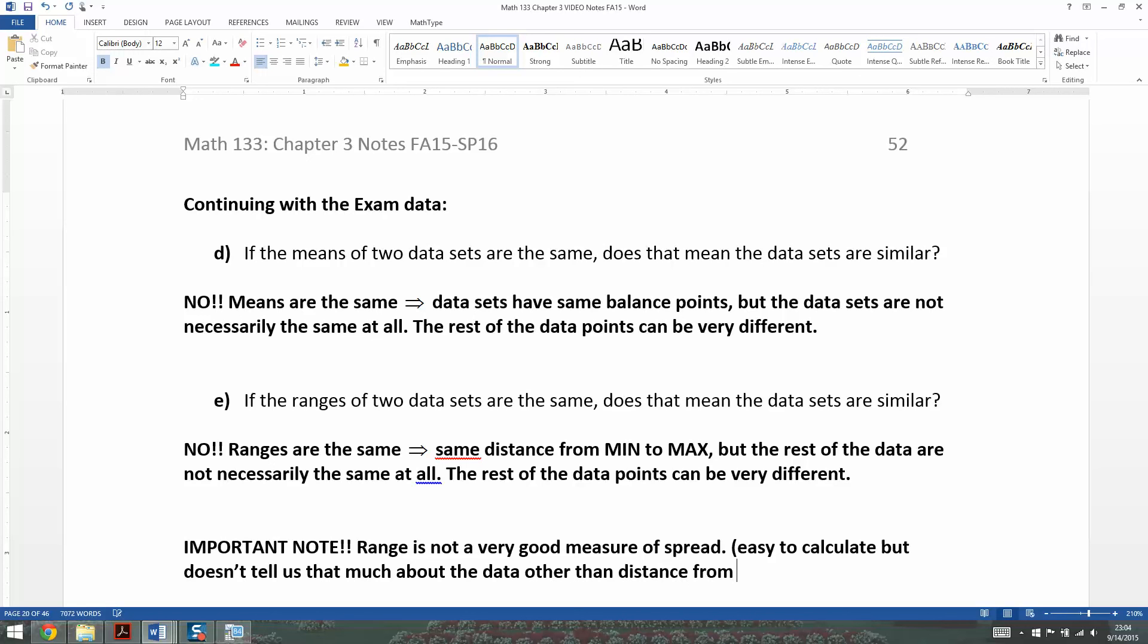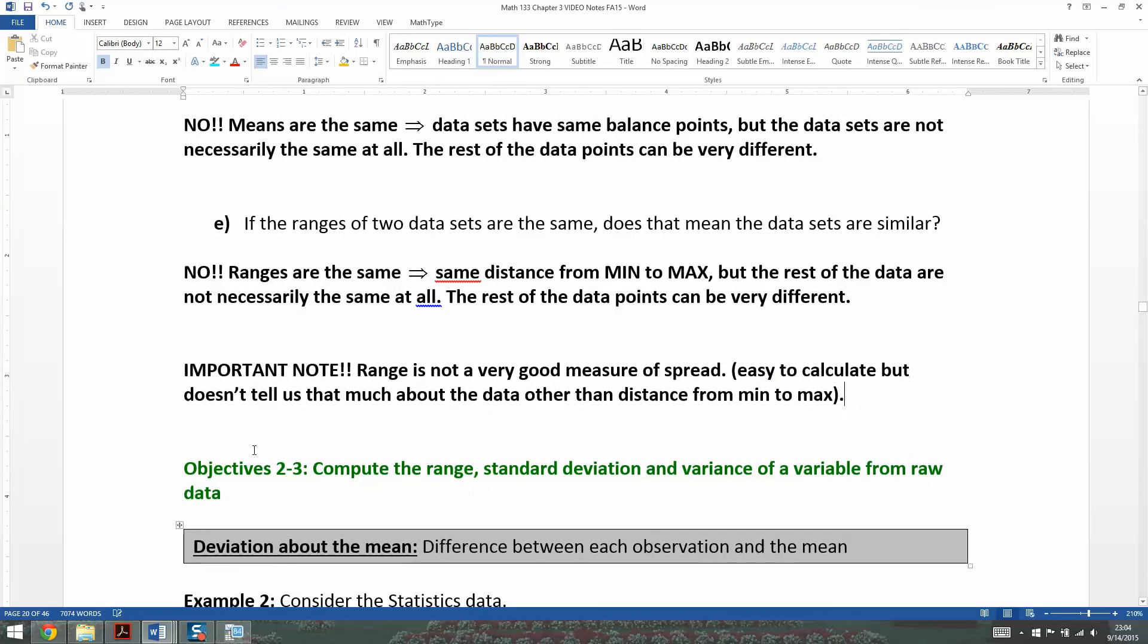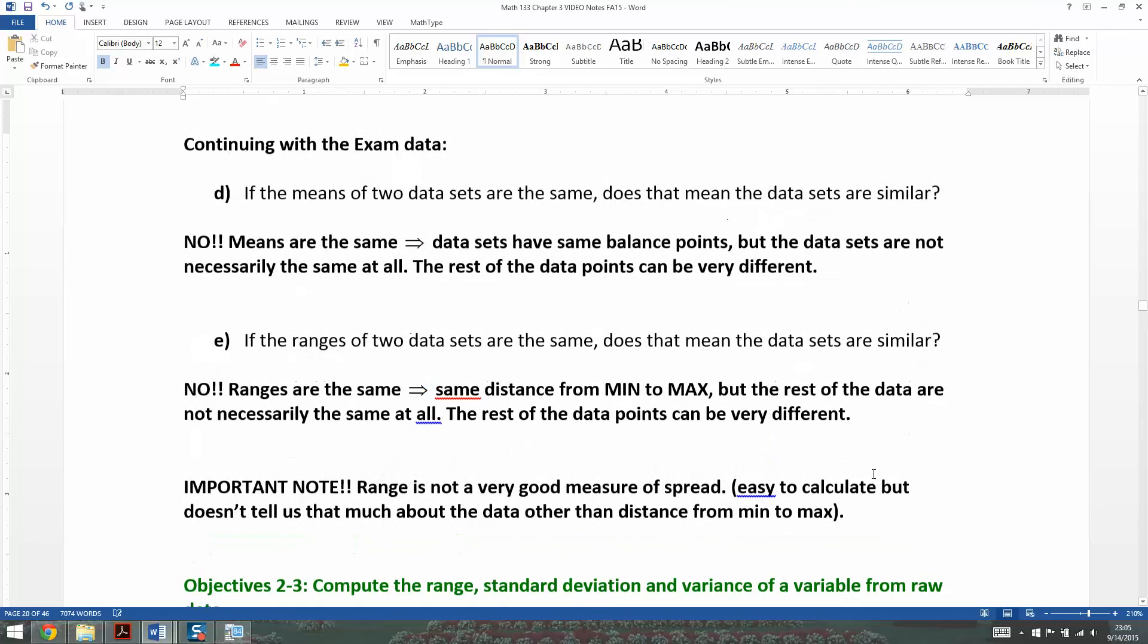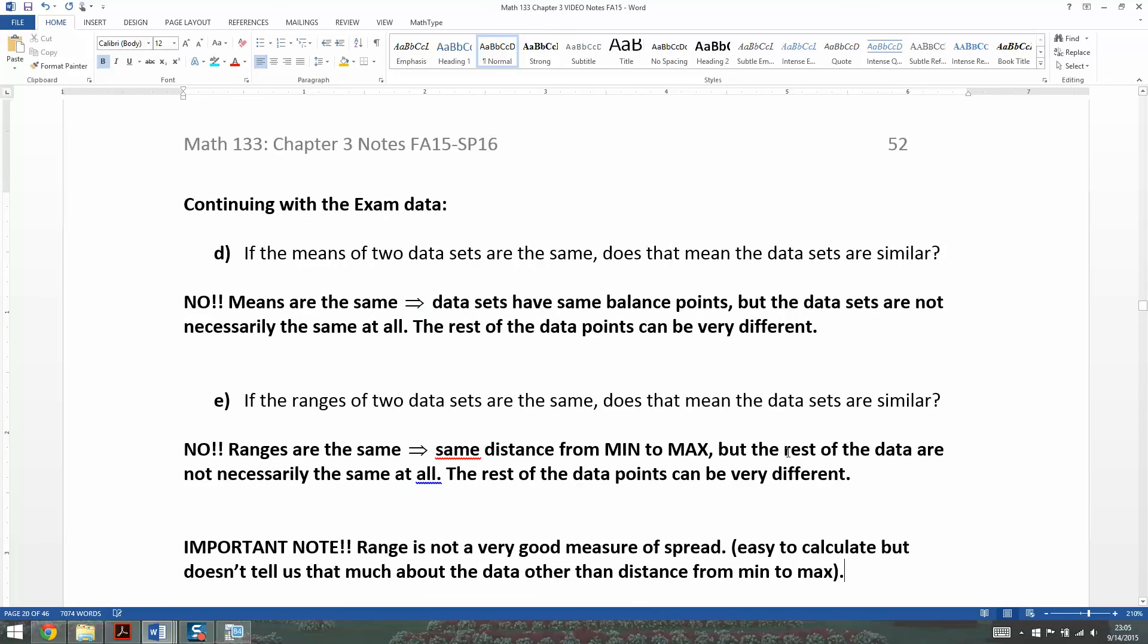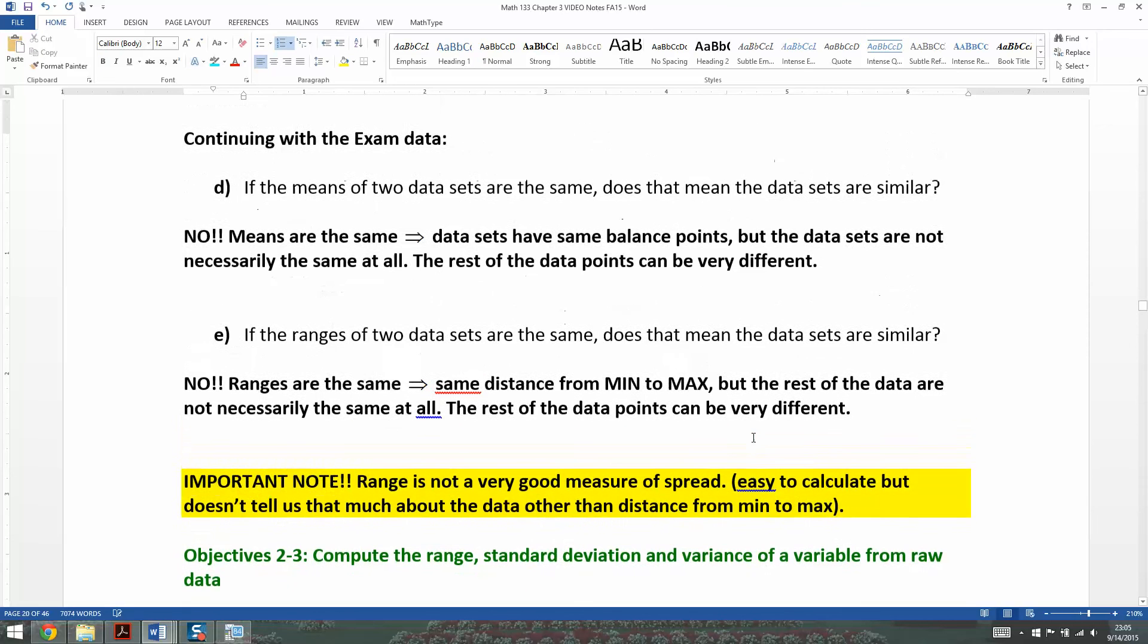That means that we need a better data point, or a better measure. That's going to be coming to us in another page, which is the standard deviation and the variance. We're going to learn how to find those, but those will be in the next video. We've learned how to find range, and we've learned that it's not a very good measure of spread. Now we've got to find something better. I'll see you back in the next video.